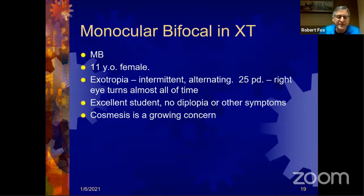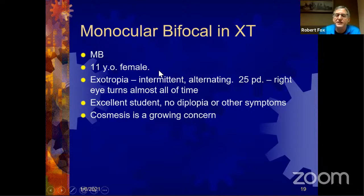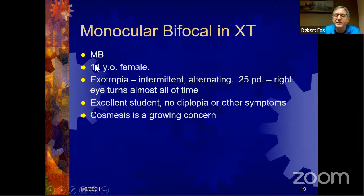Here's another case to show how this works. This was a patient with exotropia — MB, an 11-year-old girl. She came in for therapy mainly for cosmetics — an excellent student, high honor roll, a real achiever. But she has divergence excess exotropia that's very obvious, the eye turns almost all the time. She doesn't have diplopia, as these cases generally don't, but cosmetics are becoming a concern as she's 11 going on 12 — how she looks in pictures is starting to matter to her and her parents.